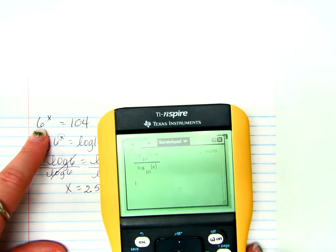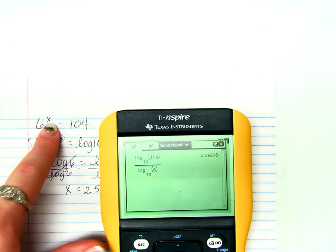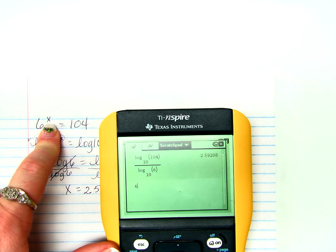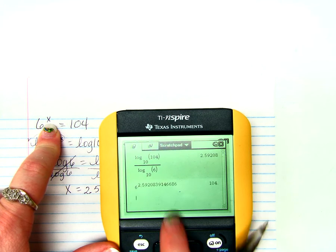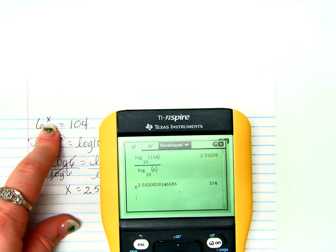And to check our work, we would say, what is 6 raised to that power? 6 raised to the control negative sign gives you the answer, the previous answer. When we do that, we get 104. So we know we're good.